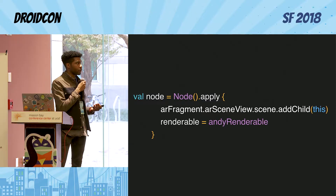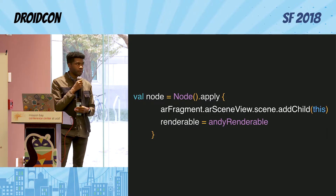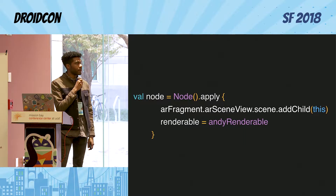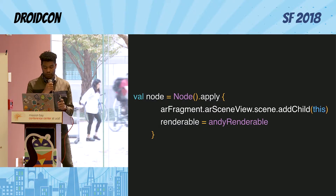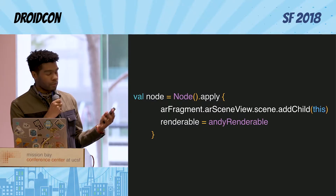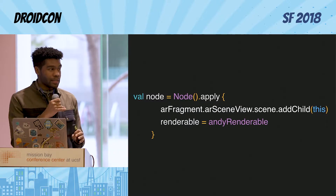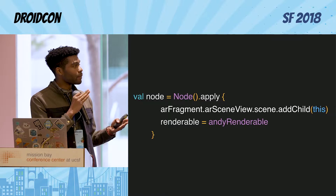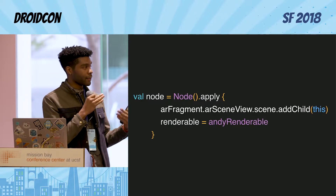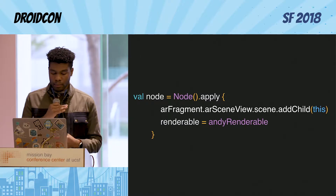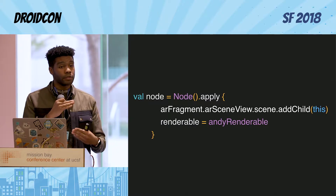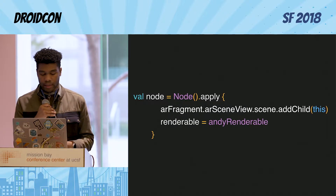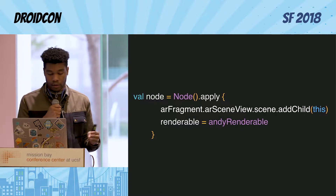Then lastly, you're going to pass that renderable from your model renderable to your node. You just add the node to the scene here, with the ARSceneView scene being that root node, and set the renderable — that's going to render your object on screen. It's based off of a high-level scene graph API, more like a tree where there's one node that everything derives from.